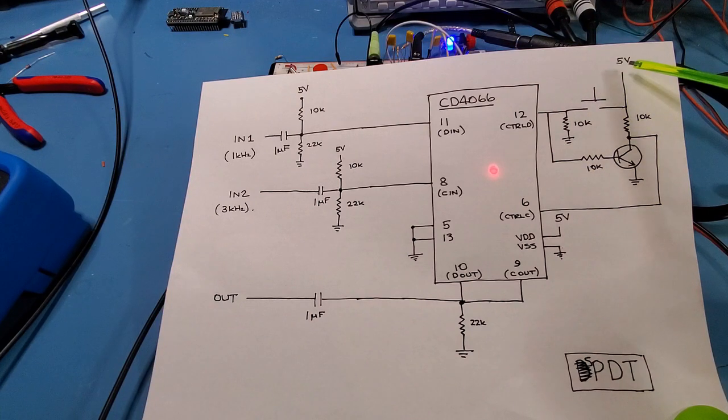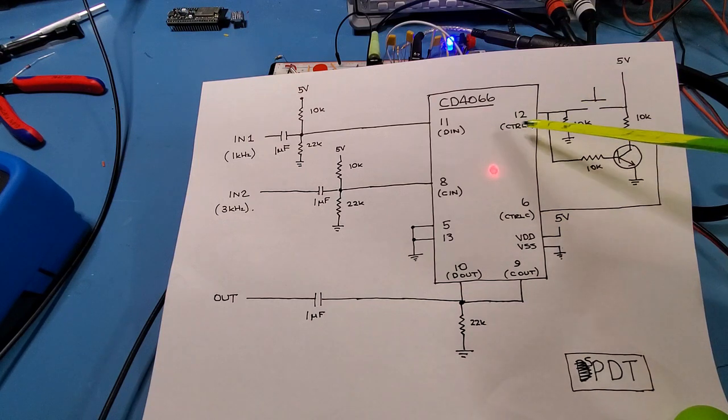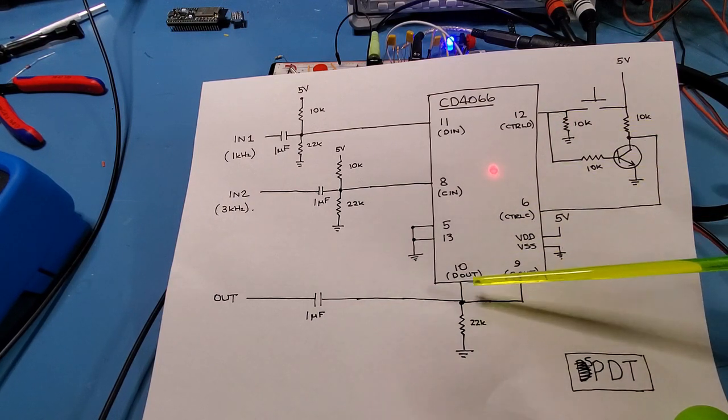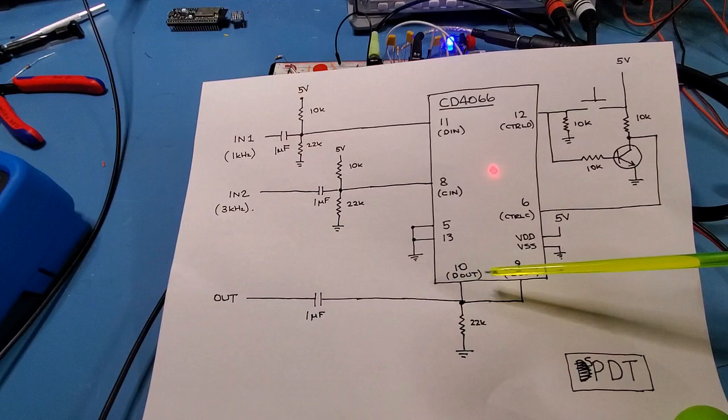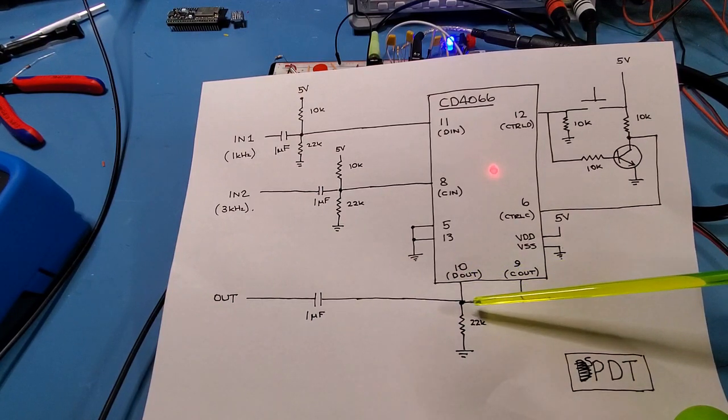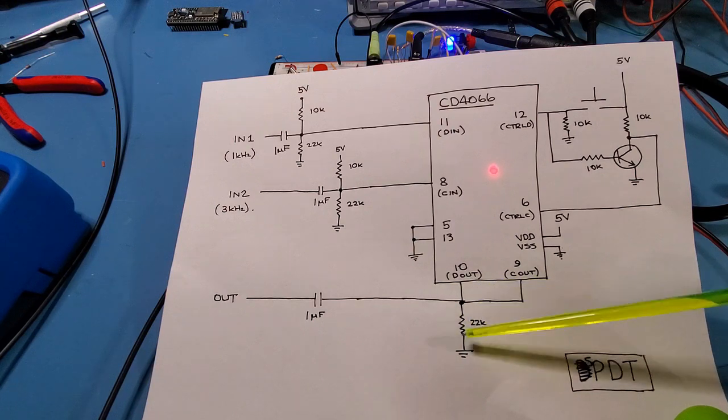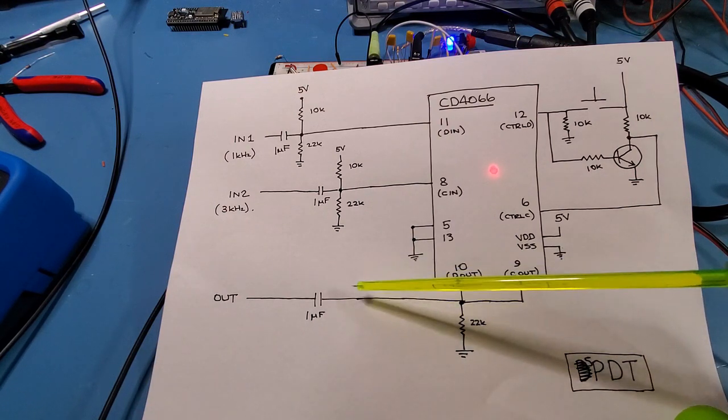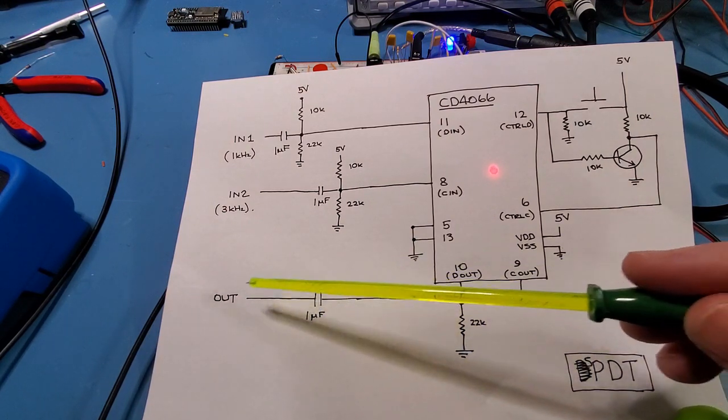And then when the switch is released transistors off in that case and five volts passes through to here so basically either control D is turned on or control C is turned on but never both together. And then finally the outputs of D and C are tied together at pins 10 and 9 through the same output that we had before. So 22k resistor there, one microfarad cap and then out.